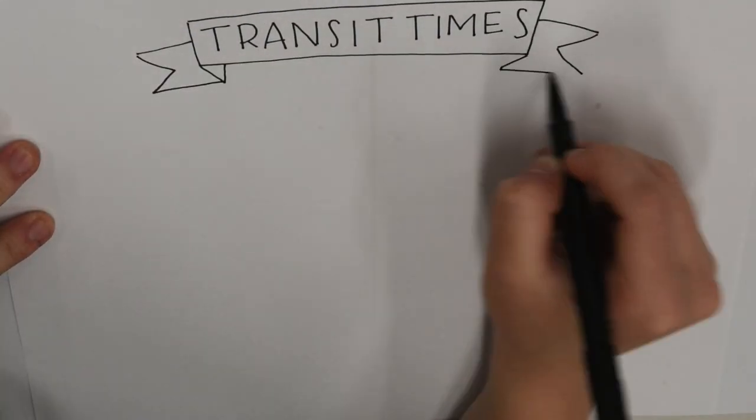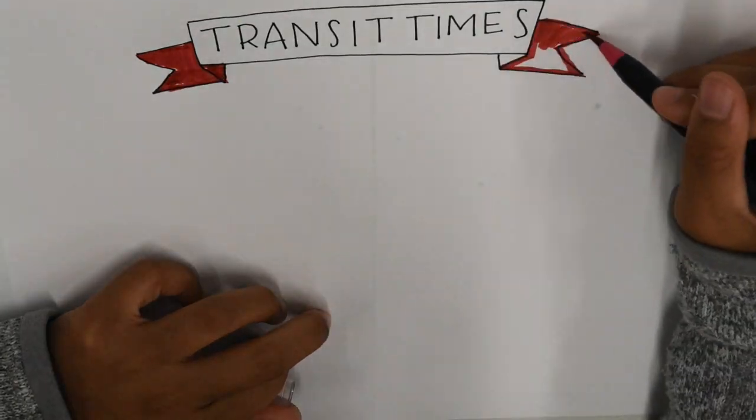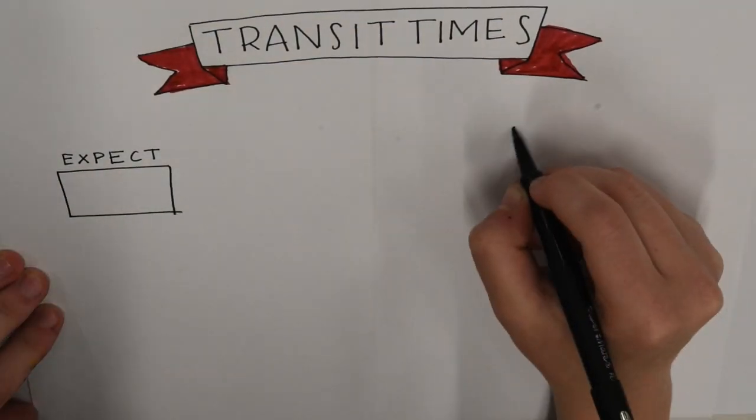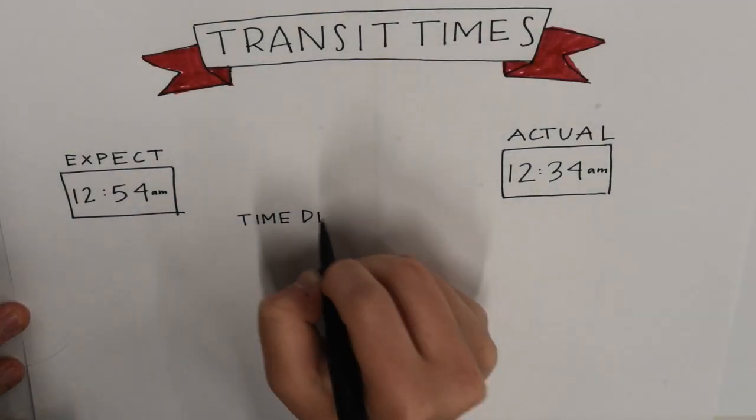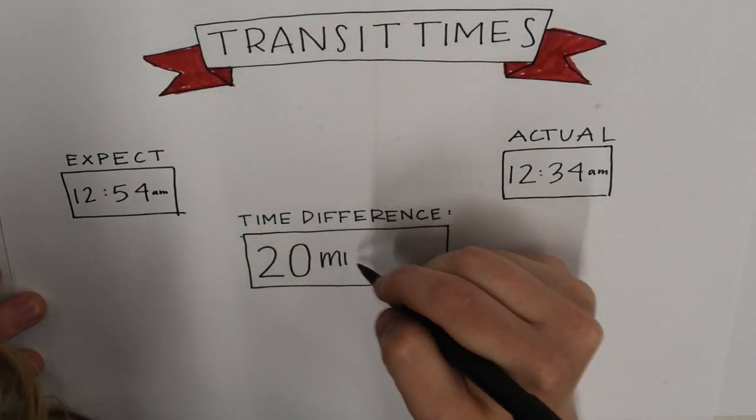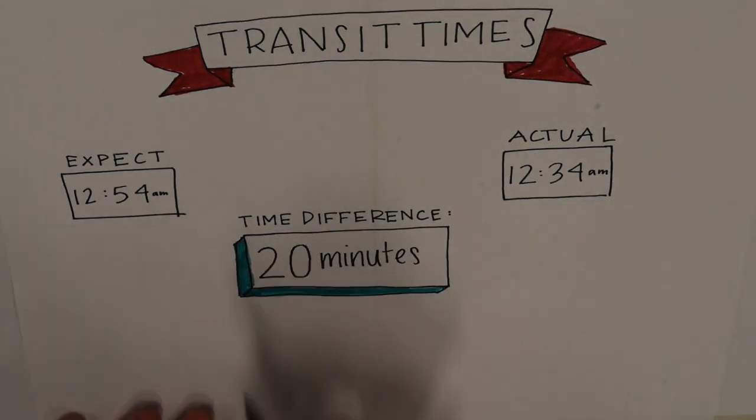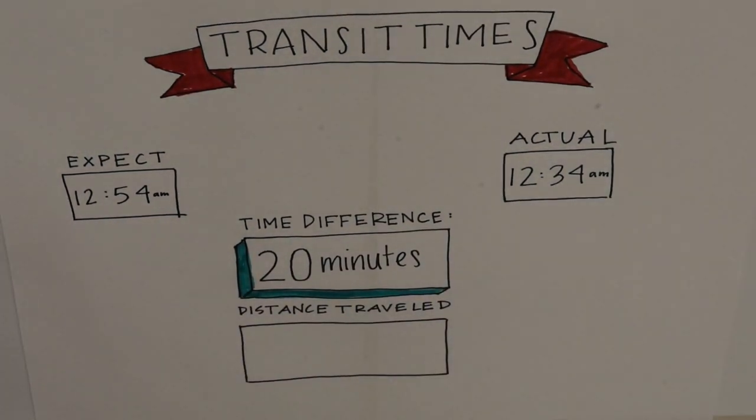After exactly six months, we expected Io to transit at 12:54 a.m. if light were infinite, but Io actually transited at 12:34 a.m., confirming that light does not travel instantaneously. Using this time difference of 20 minutes,